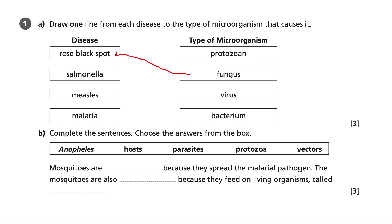Salmonella is caused by bacterium, so it goes down there to bacterium. Measles is a virus, so we'll draw a straightish line across like that. Then malaria is a protozoan.